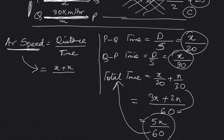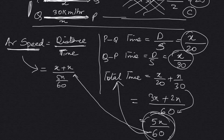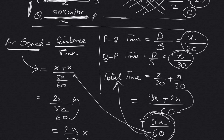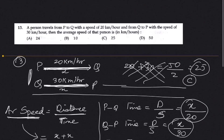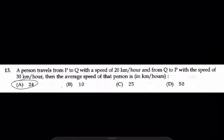So average speed equals total distance by total time: 2X divided by 5X by 60, which is 2X into 60 by 5X. The answer is 24 km/h, which is Option A. This is how you solve this question.